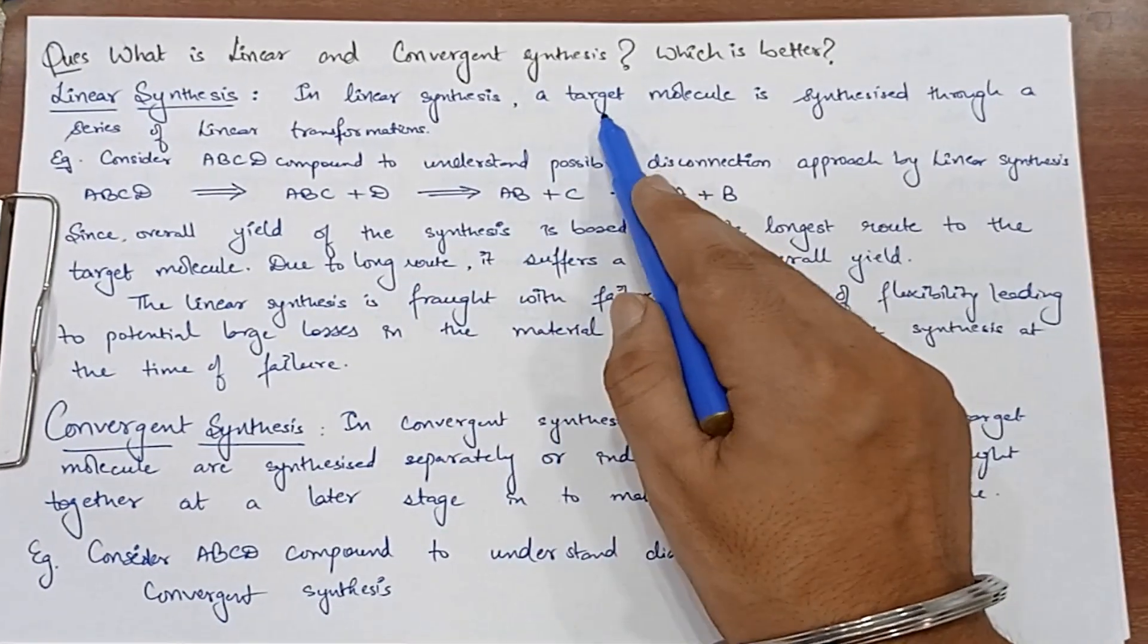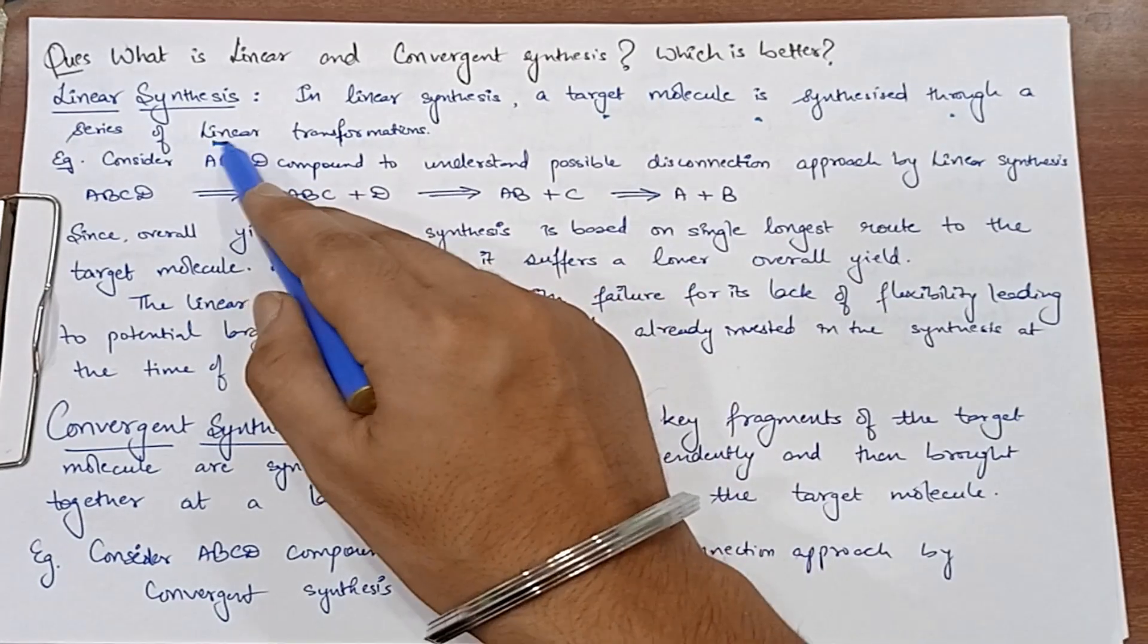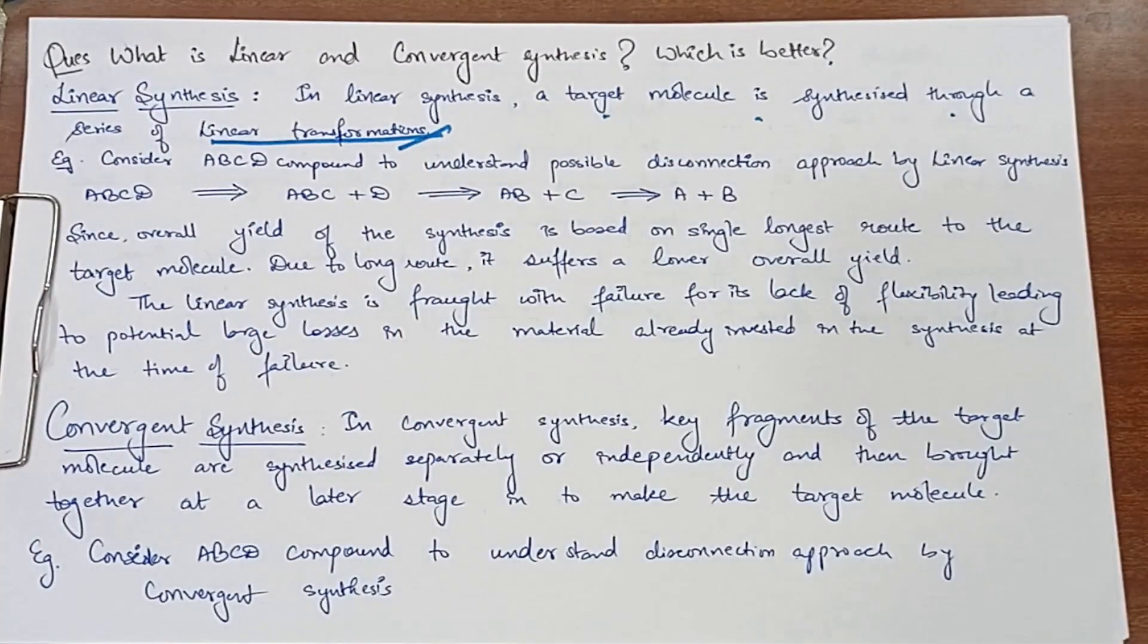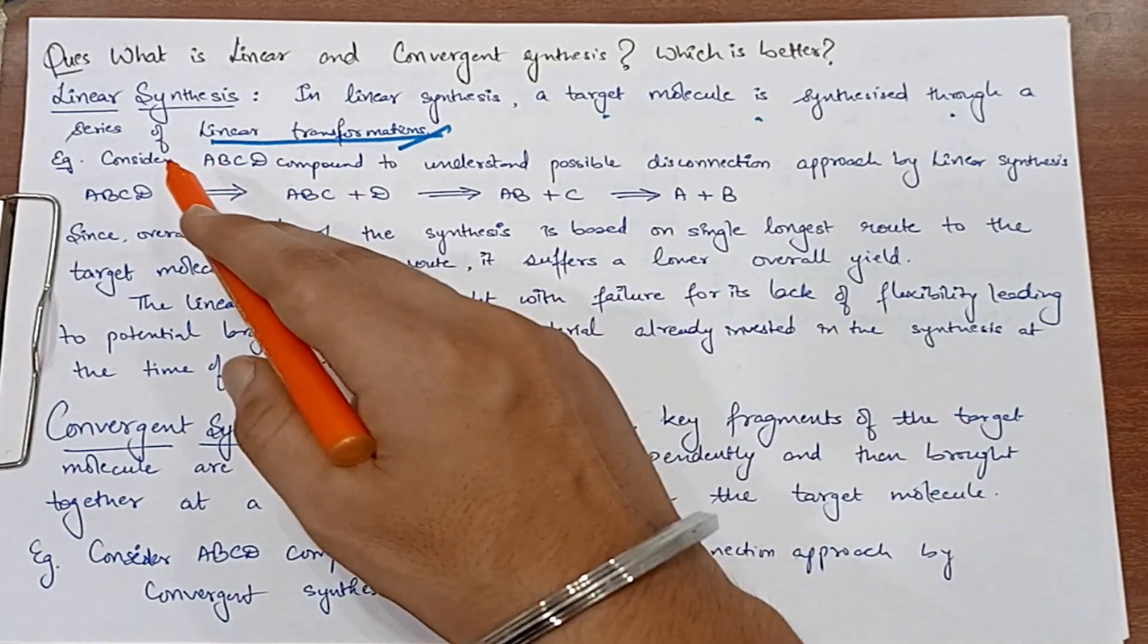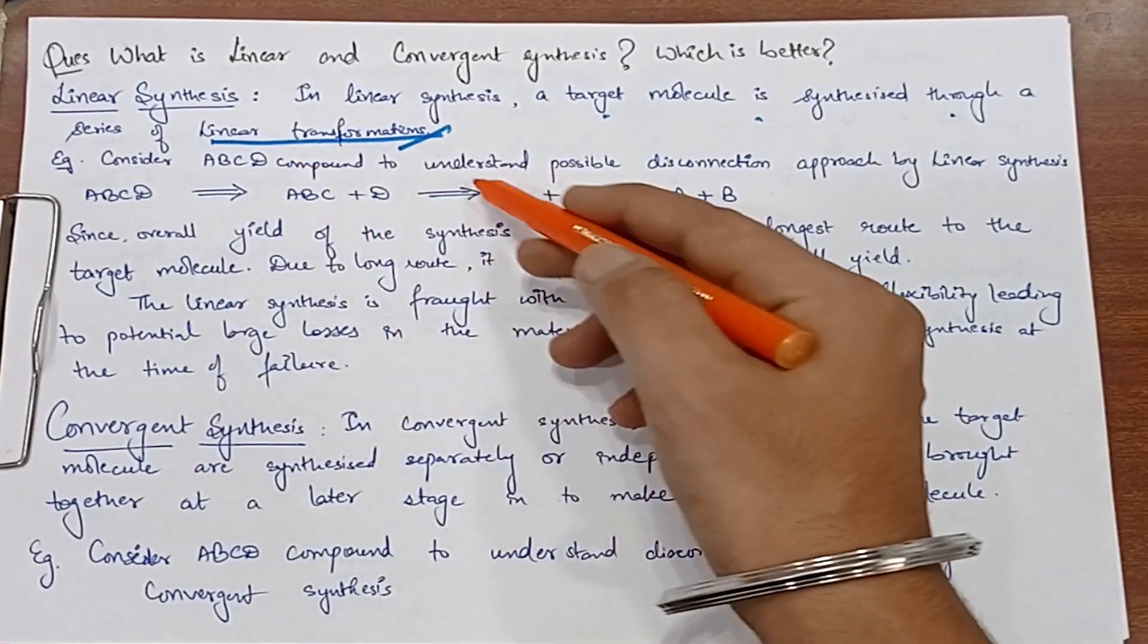What is in linear synthesis? Target molecule is synthesized through a series of linear transformations. Okay, here we have many linear transformations in target molecule to synthesize. This example is like our ABCD compound.